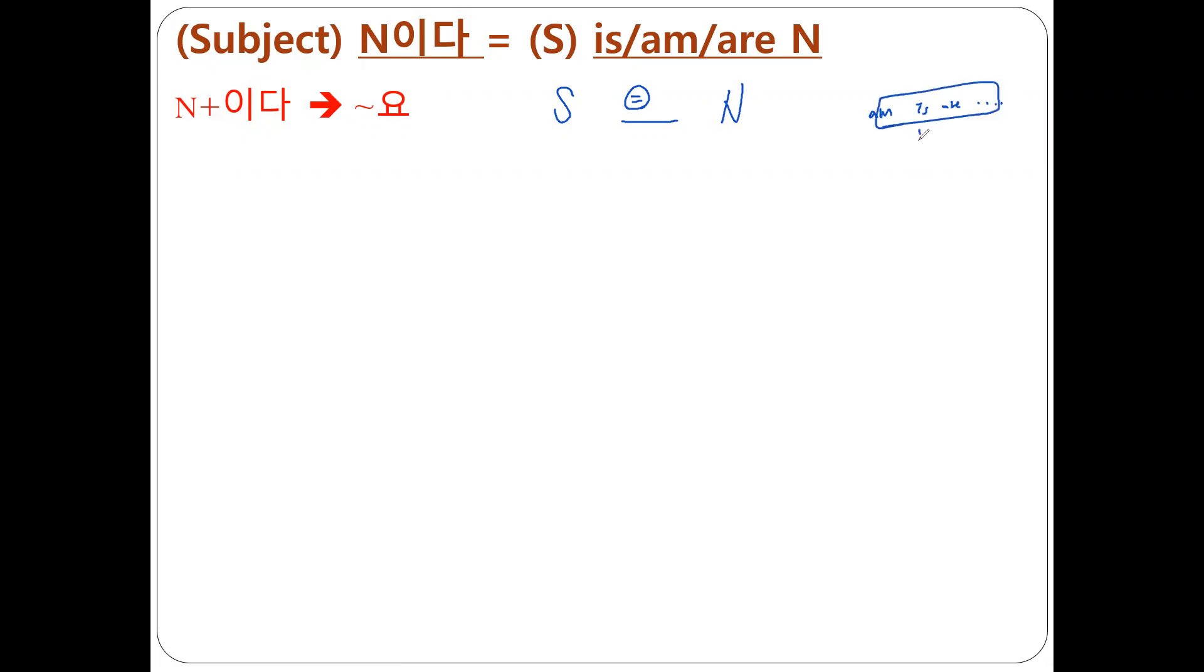이다, this, to be copular's dictionary form is B, right? B, Korean 이다, is B, so dictionary form for these things, 이다. Then, 이다 is yo form, casual polite speech style. We have to use casual polite. 이다 is yo form.